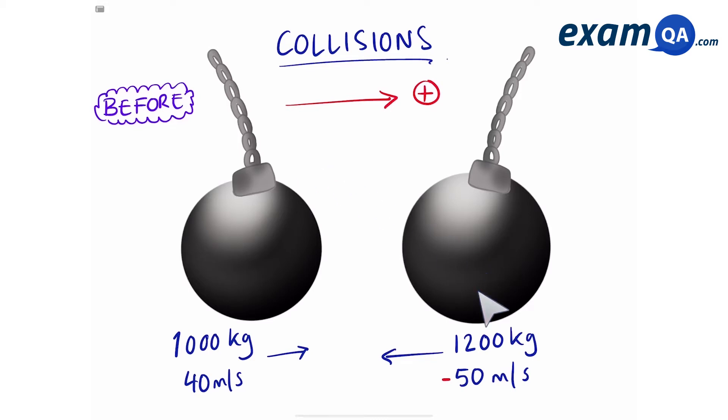The ball on the right will have a negative sign in front of the velocity because it's moving in the opposite direction to the ball on the right. So how do we work out their momentum? So again, remember the formula was momentum is equal to mass times by velocity.